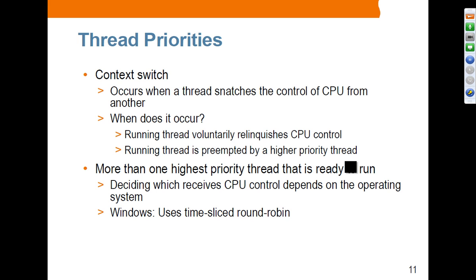If there are more than one thread with the same priority, the operating system will determine which one to run next — it depends on the operating system. In the case of Windows, by default it uses a time-sliced round-robin scheme.